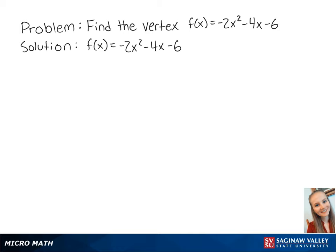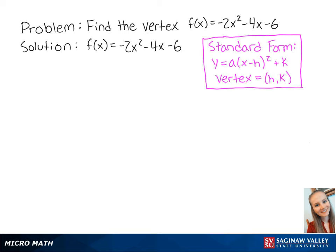For this problem, we want to find the vertex of the equation f(x) = -2x² - 4x - 6. To find the vertex, we want to put the equation into standard form by completing the square.